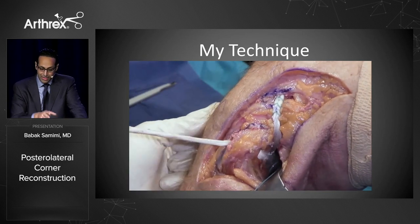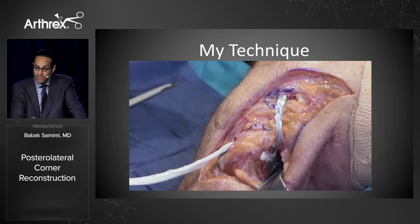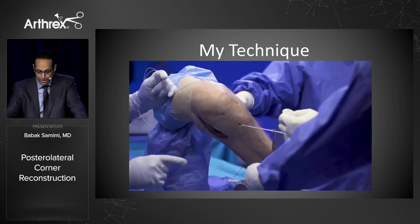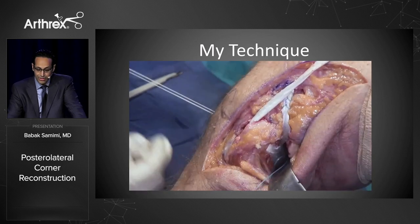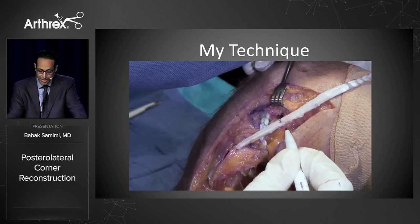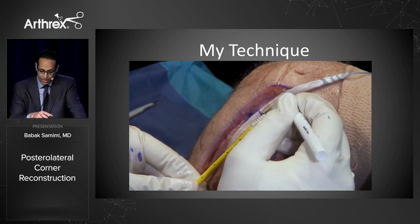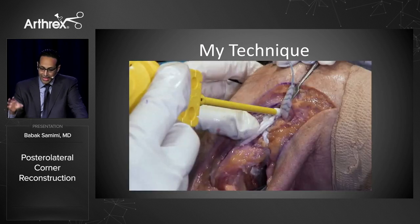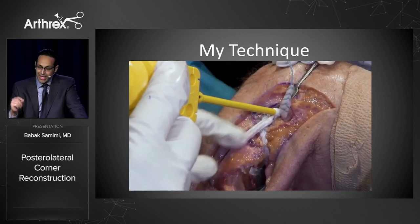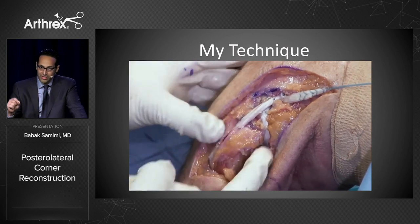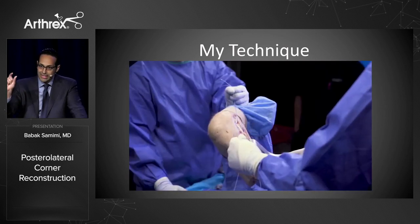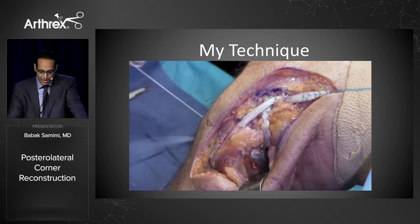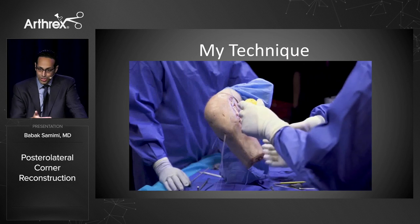I pass the tightrope around the end of the graft and bring that end of the graft through. The popliteus limb is now done. That brings over the popliteofibular limb, and then you bring it right back up to the femur and you've reconstructed the fibular collateral ligament portion. The beautiful part is that I can continue to retension it — I haven't committed to final fixation yet. I can get some preliminary fixation; it's bone-preserving. All I need is about 15 to 20 millimeters in the back of the tibia.